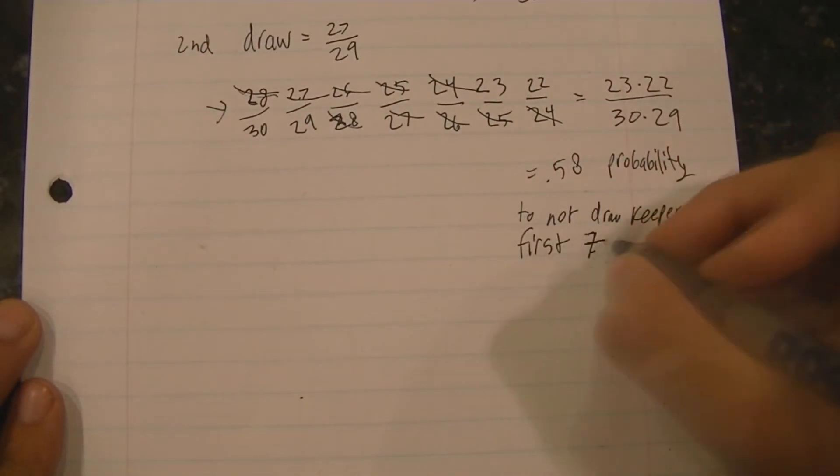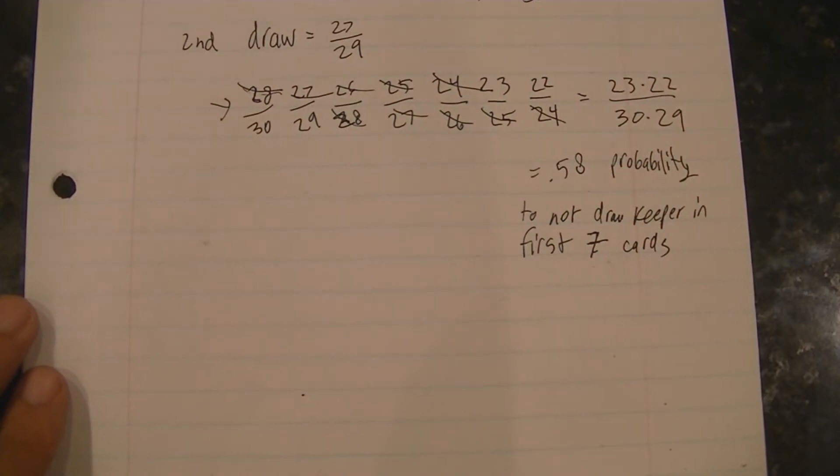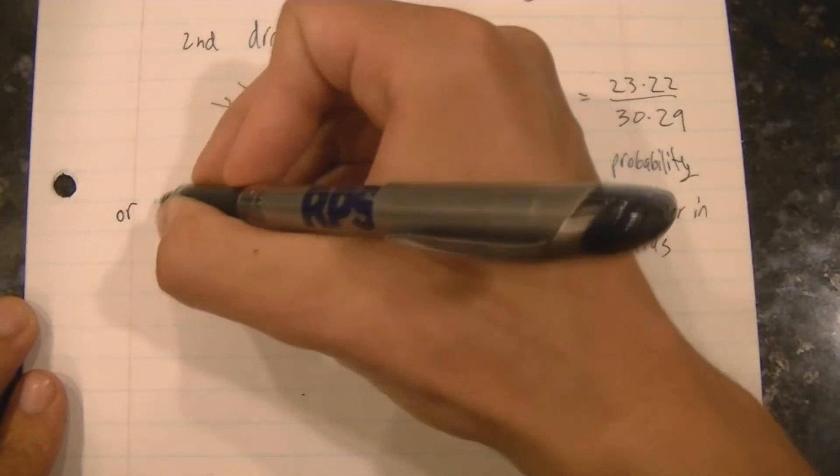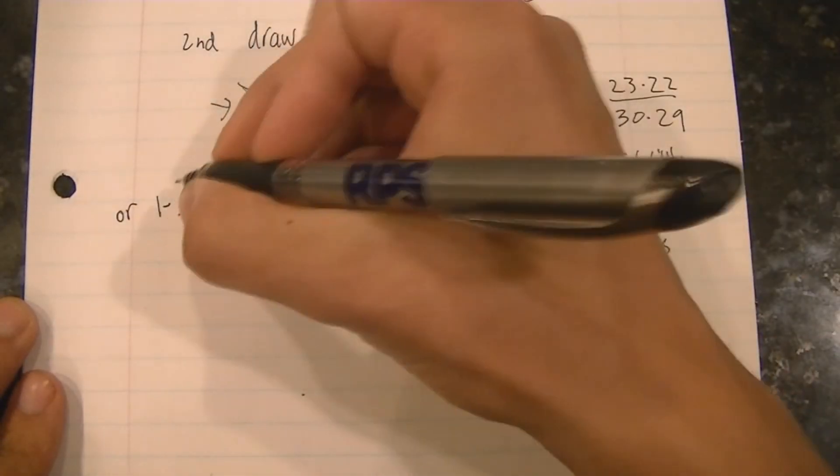And now finally we can use this probability to answer our original question which was the probability to find at least one Keeper in one of our first seven draws.